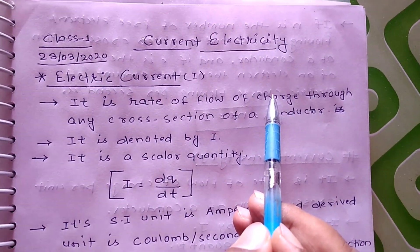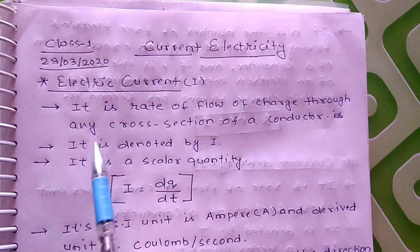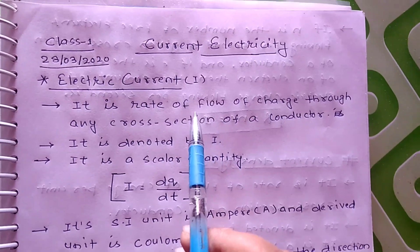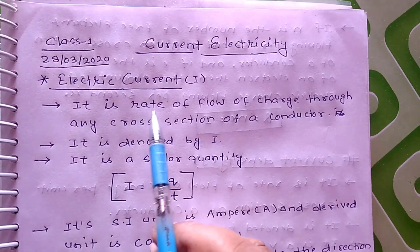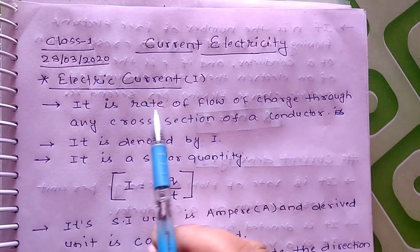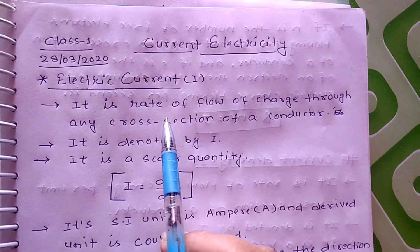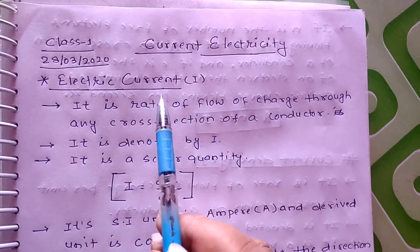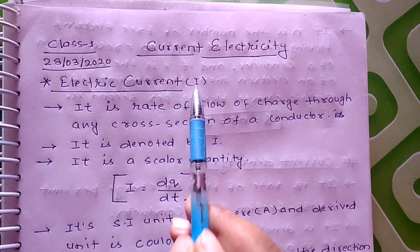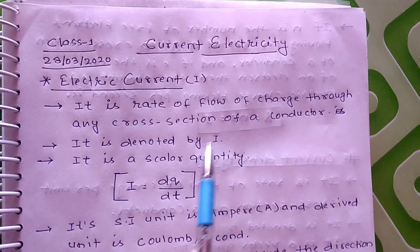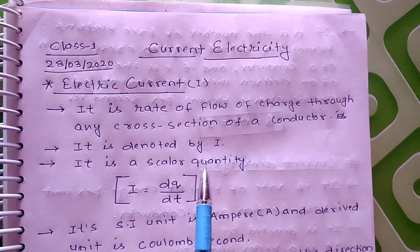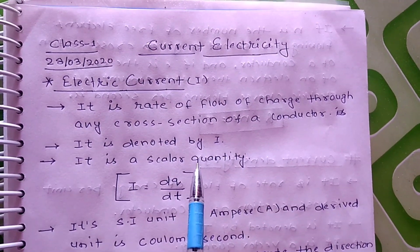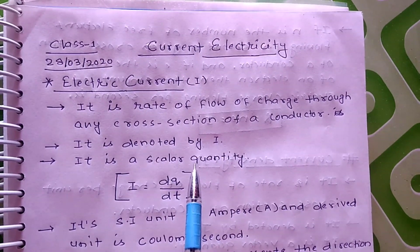Rate of flow of charge through any cross section of a conductor — this flow of charge will be the electric current. It is denoted by I. It is a scalar quantity. Why is it a scalar quantity? Because it does not follow the triangle law of vector addition.